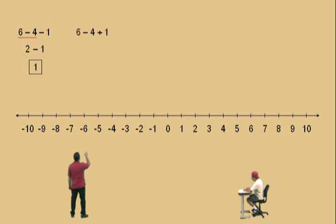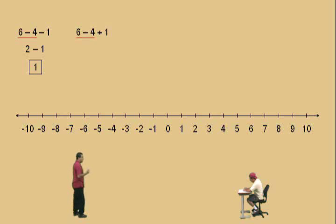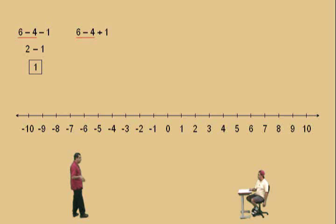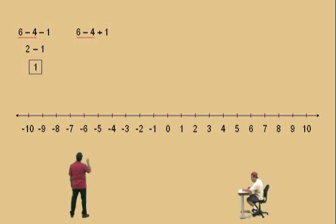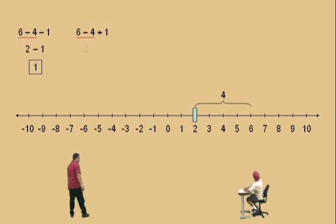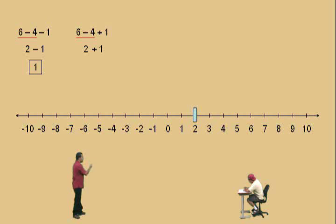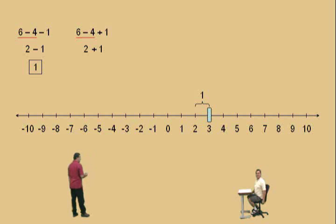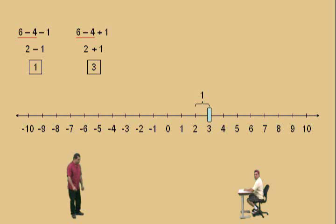Here's another problem, Charlie: six subtract four plus one. Again, we must work left to right. You don't want to add the four and one first — remember, you can add the four plus one first if you want to repeat this class! Work left to right: we start with six subtract four, which is two. And now to the two, we have to add one, which means we move to the right one time, and our answer is three. That is the correct answer.